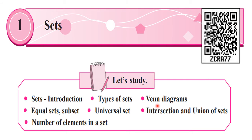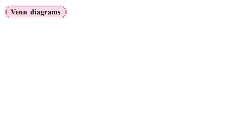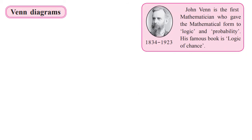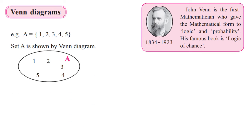Now let us go ahead towards the next topic, that is Venn Diagrams. We saw two methods of writing the set. Here, this is one more method to write a set. In this method, the sets are represented by using a figure — any geometric figure like circle, oval shape, triangle, rectangle, square. Any geometric shape you can use for representing the set. Such a figure is called a Venn Diagram.